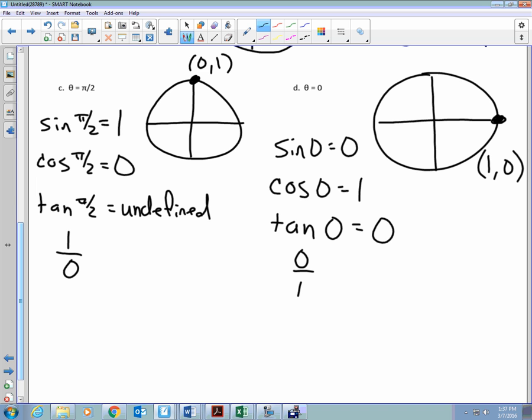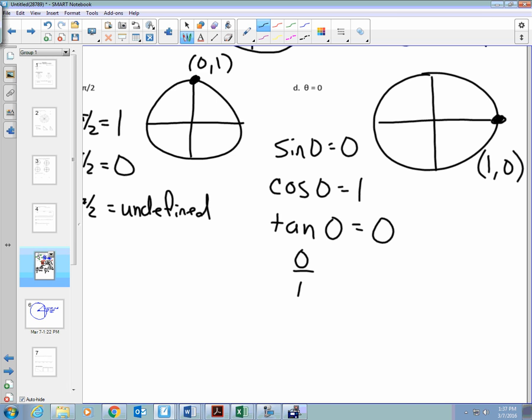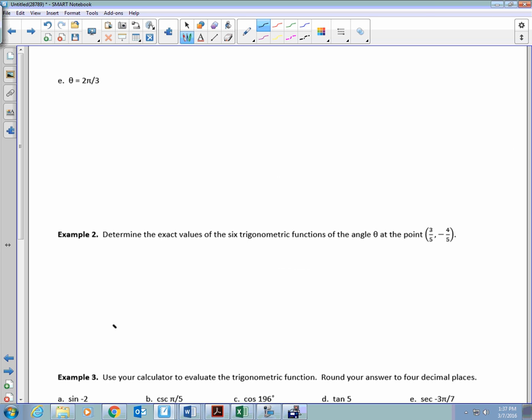So see four examples. Do those seem like ones that we're capable of doing now? Because we already know the terminal point. Now all we need to do is we need to identify sine, cosine, or tangent. We're going to do one more together. 2 pi over 3.